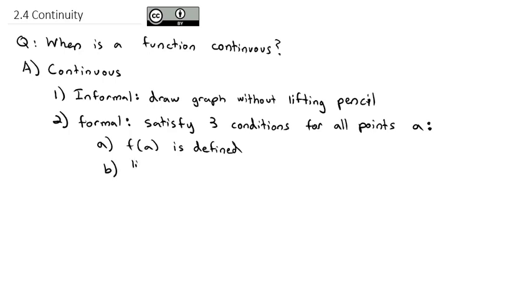In addition, we need the limit as x approaches A of f of x to exist. So for example, if the function is approaching two different numbers from two different sides, the limit does not exist.